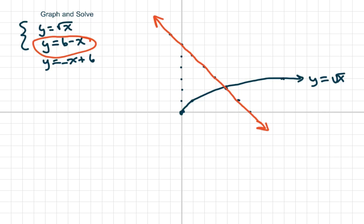Some of you are used to seeing this as y equals negative x plus 6. Since my y's are already set for me, I'm using substitution, y equals y. So we have the first y is square root of x, second y is 6 minus x.